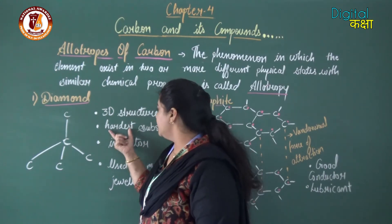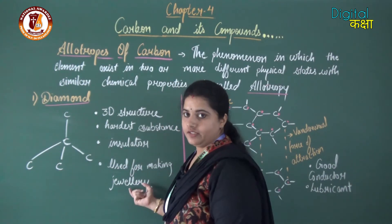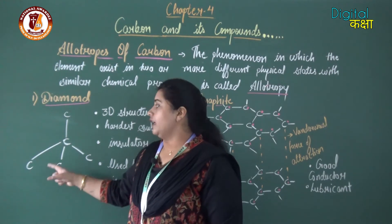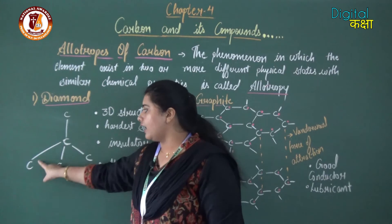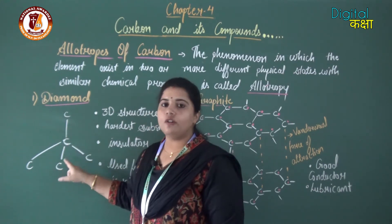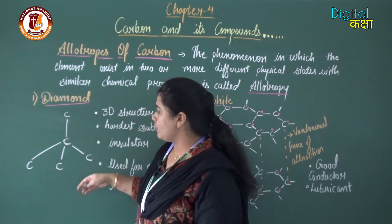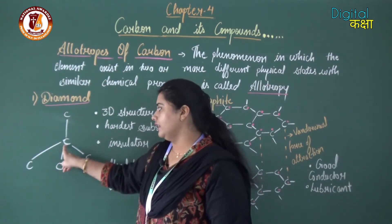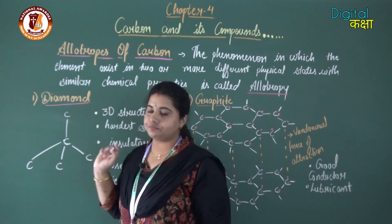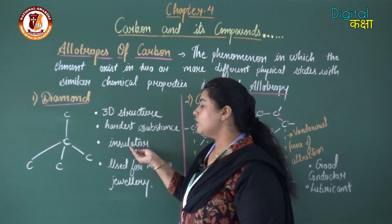Diamond has a 3D structure and is the hardest substance known to us. It acts as an insulator and is used for making jewelry. In diamond's structure, each carbon is attached to four other carbons by covalent bonding in a tetrahedral unit. This bonding is very strong, which is why diamond is the hardest substance. Each carbon is attached to four others, forming a long network of tetrahedral CH4-like units.